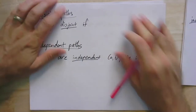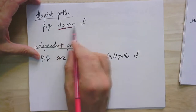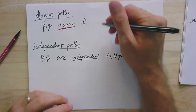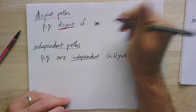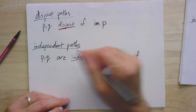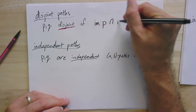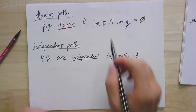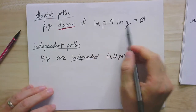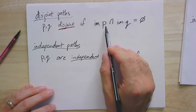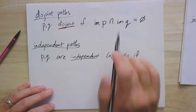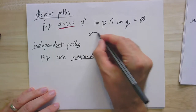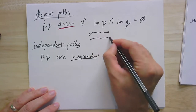Two paths are disjoint if they don't share any vertices and they don't share any edges. If we think about paths in terms of homomorphisms, that's like saying the image of one path P intersected with the image of the other path Q is empty. This is just like disjointness of sets — the image of the homomorphism is a subgraph, and the two subgraphs don't share any vertices or edges. In pictures, you think of them as paths that just don't touch at all.